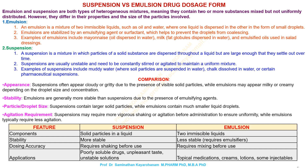Examples of emulsions include mayonnaise, oils dispersed in water, milk with fat globules dispersed in water, and emulsified oils used in salad dressings.